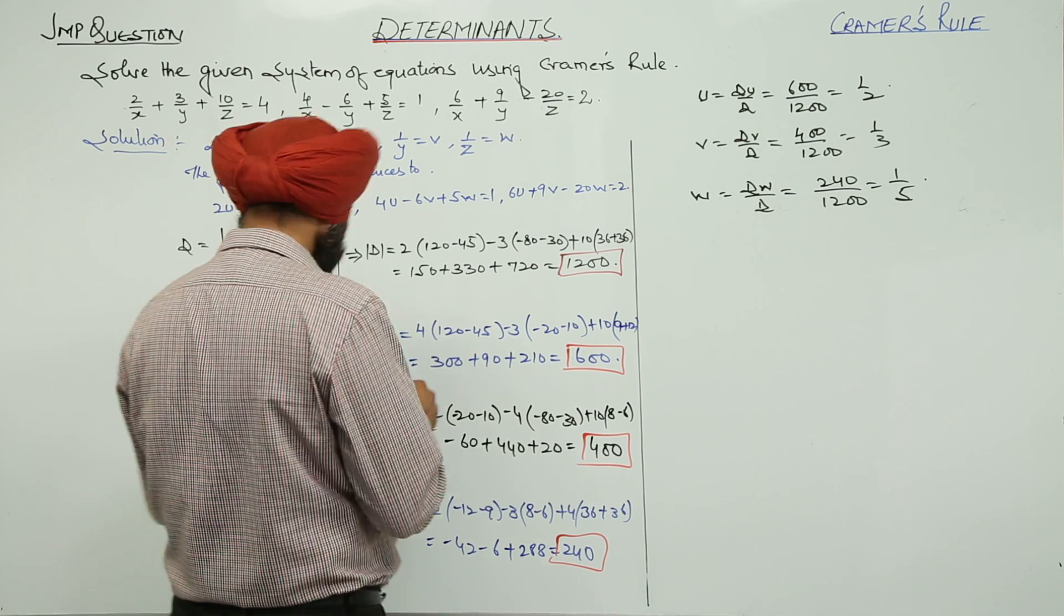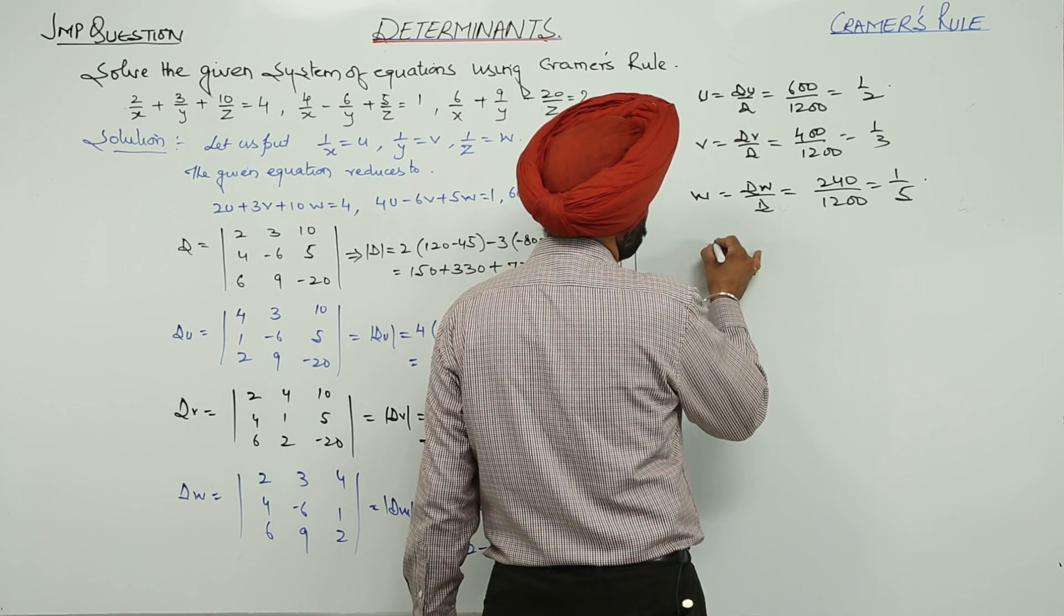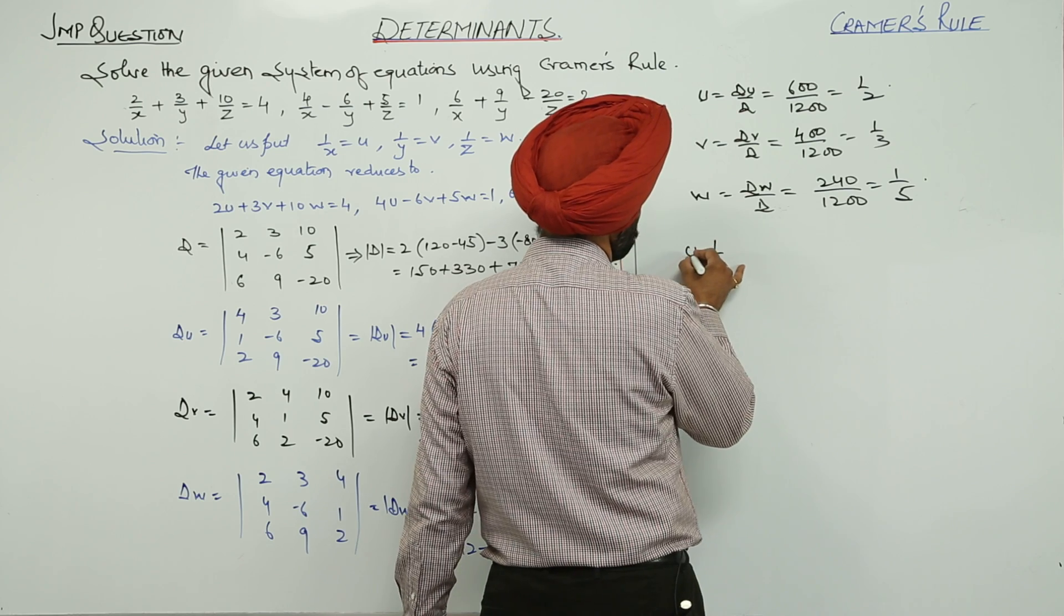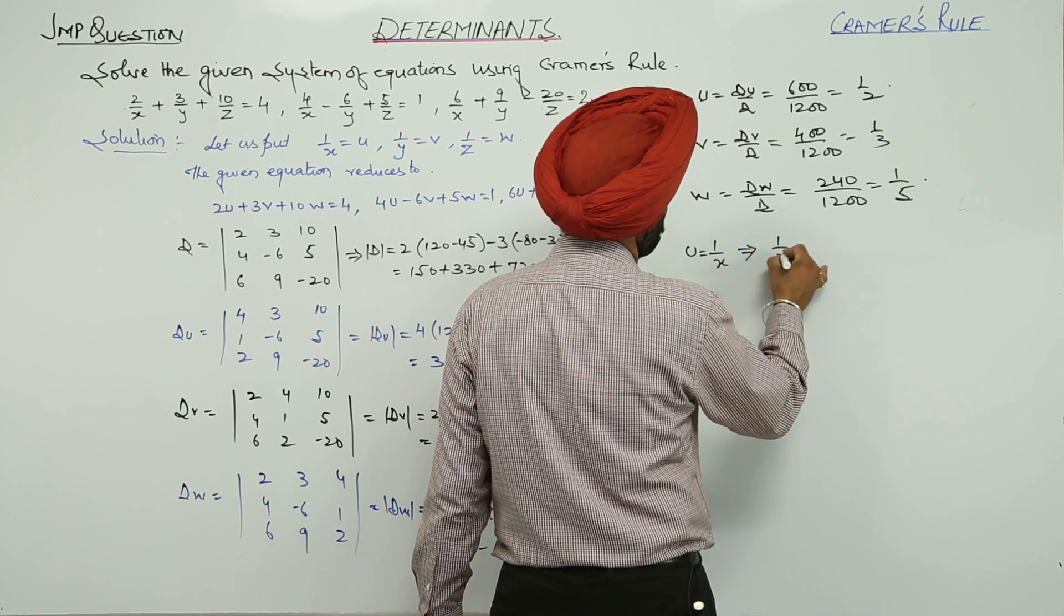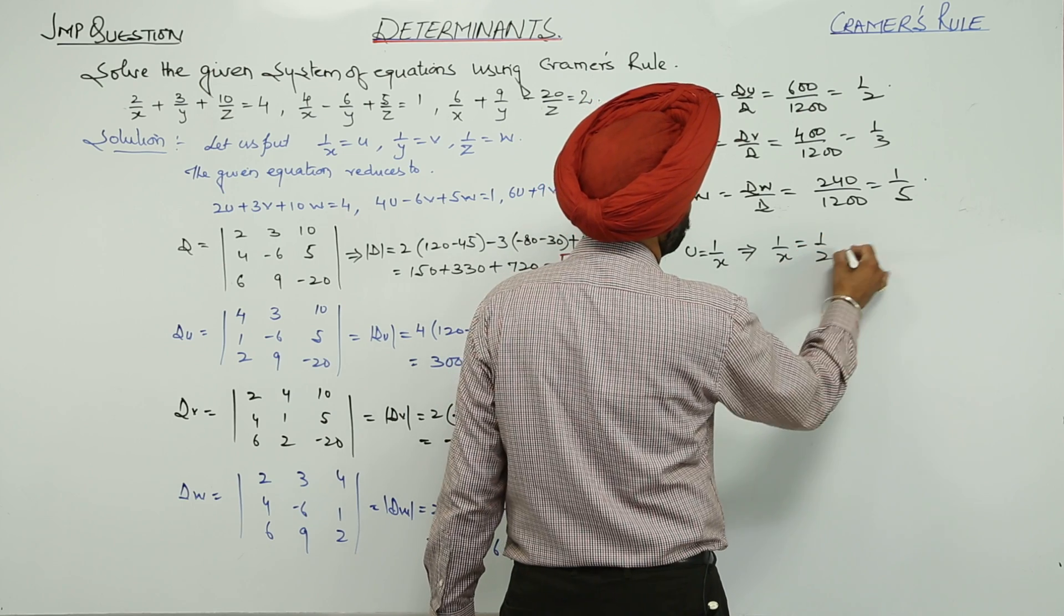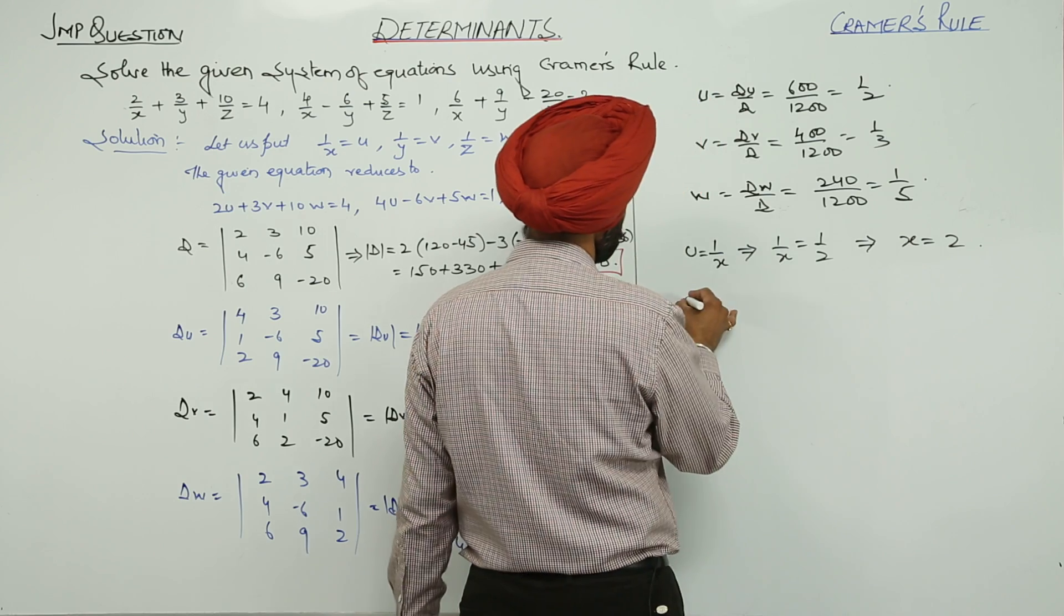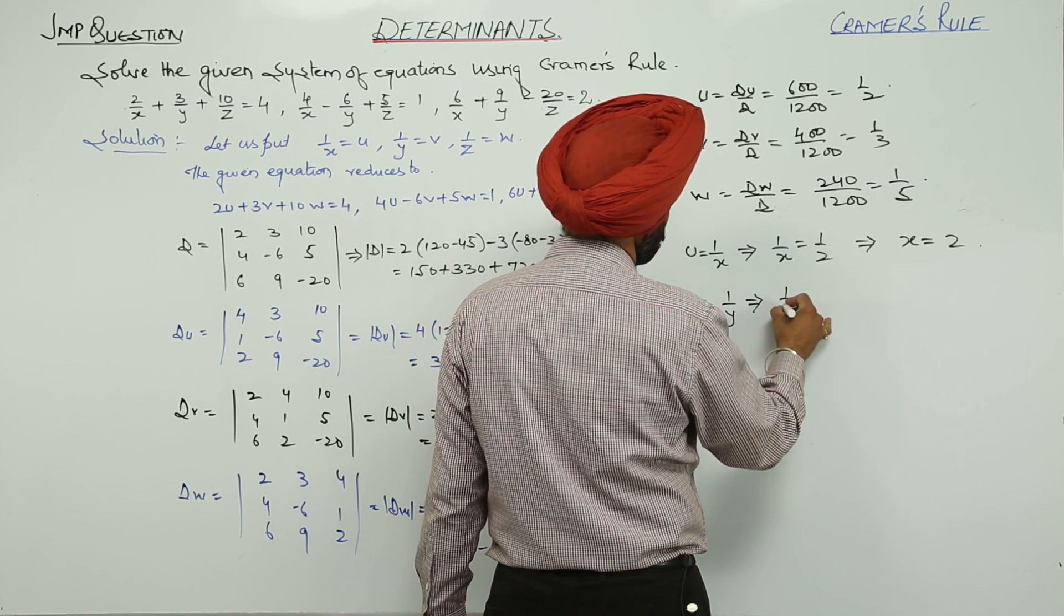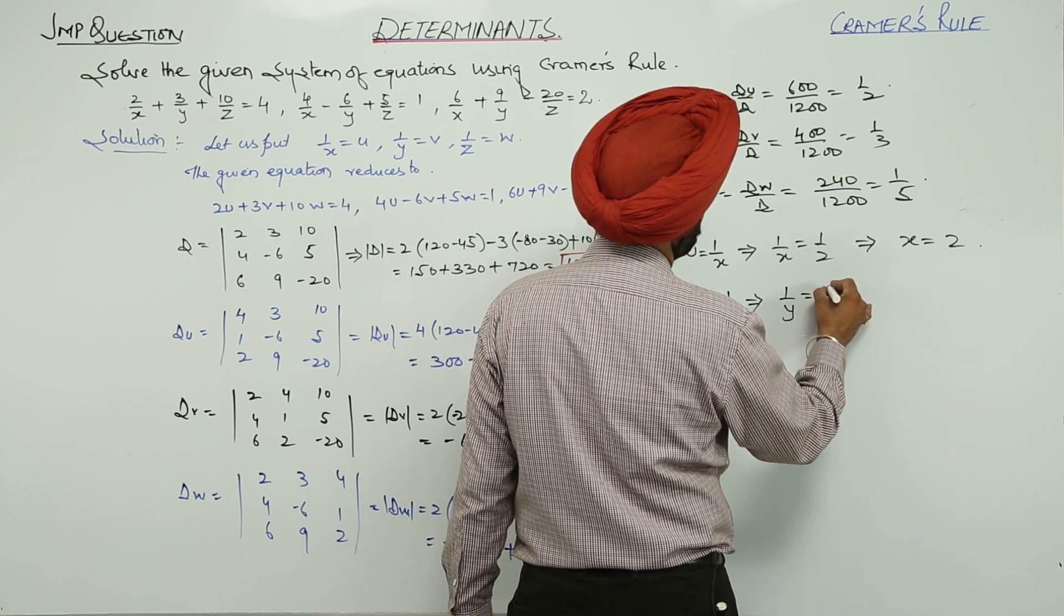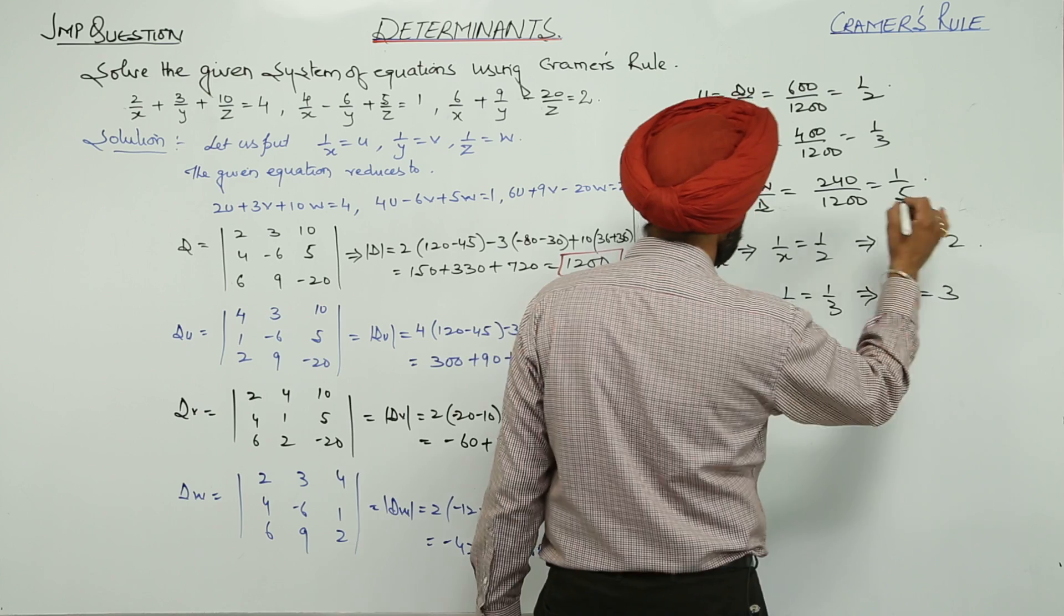U is equal to 1 upon x. Now, 1 upon x is 1 upon 2. X is equal to 2. V is equal to 1 upon y. 1 upon y is 1 upon 3. Y is equal to 3.